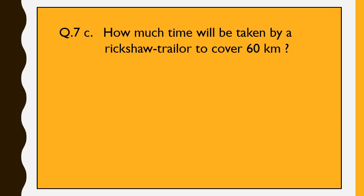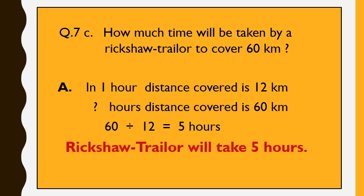Next question: how much time will be taken by a rickshaw trailer to cover 60 km? As shown in the table, a rickshaw trailer covers a distance of 12 km in 1 hour. So for 60 km, we cross multiply and divide: 60 multiplied by 1 is 60, then divide by 12, giving us 5 hours. So, a rickshaw trailer will take 5 hours to cover a distance of 60 km.